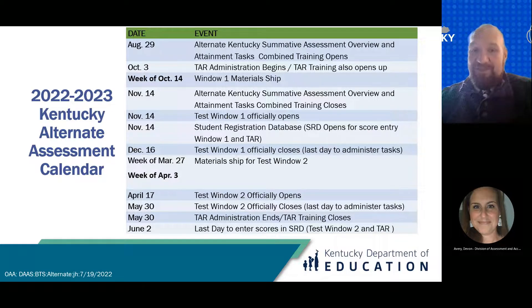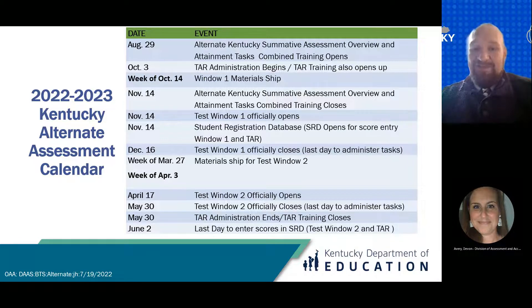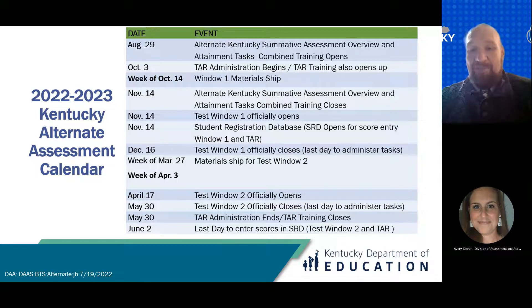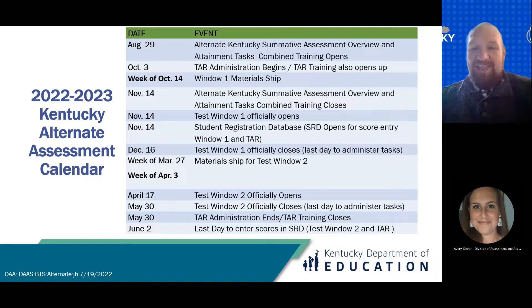This slide shares the proposed dates for the 2022-2023 school year. As noted, these dates may be subject to change due to circumstances beyond KDE's control. A key change is that the Office of Assessment Accountability and the Office of Career and Technical Education have joined with data partners and the University of Kentucky to compile a comprehensive calendar with all dates for all programs — data pools, opening and closing, tasks within the SRD and CRD. Once finalized, this calendar will be released via Monday Doc email, an alternate email, and will be available on the KDE website.